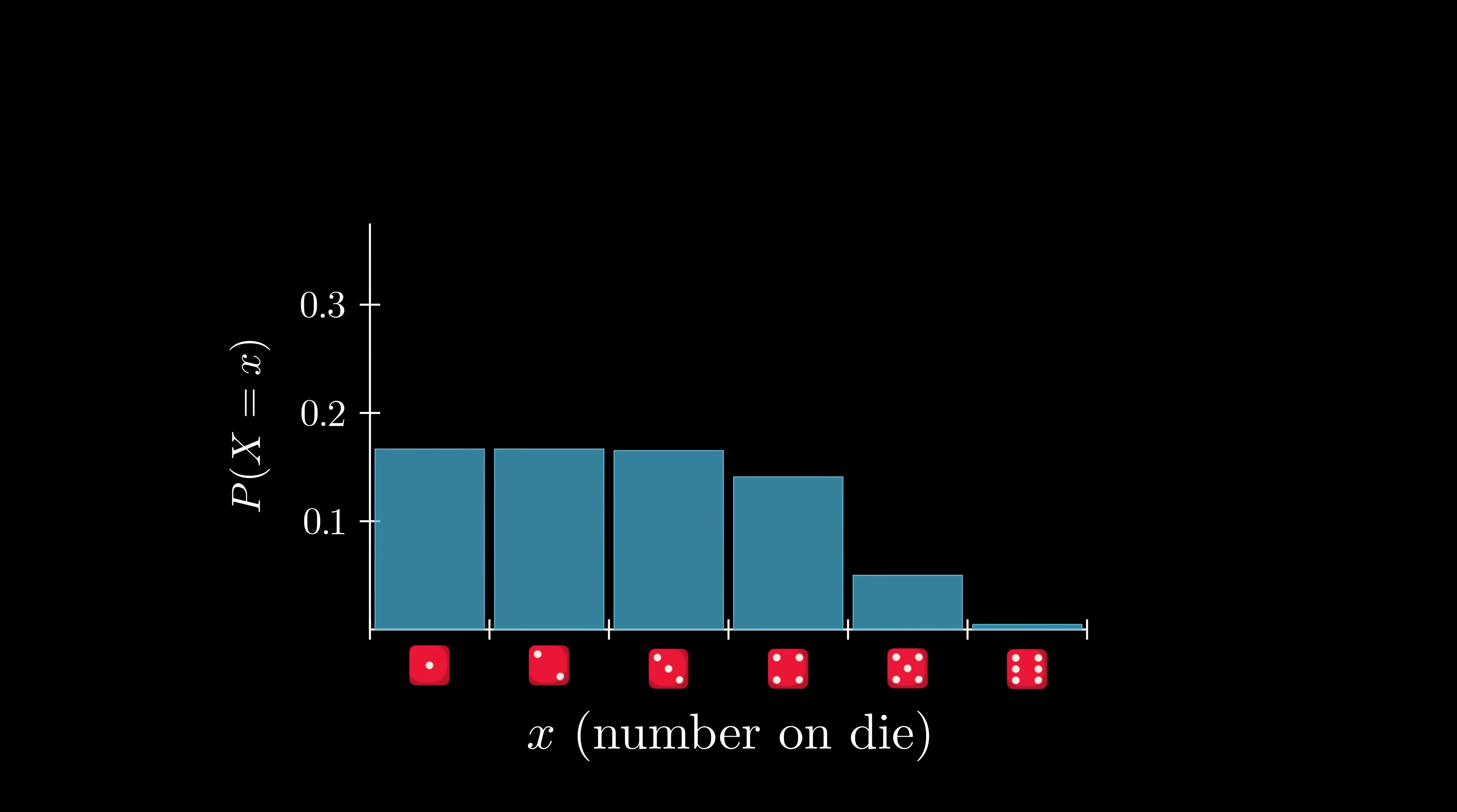Think about what happens when you roll a fair, six-sided die. There are six possible outcomes, the numbers one through six, and each outcome has a one-sixth chance of occurring.